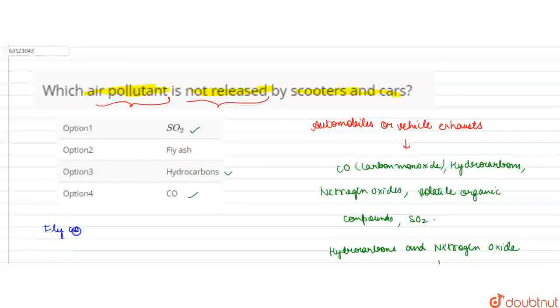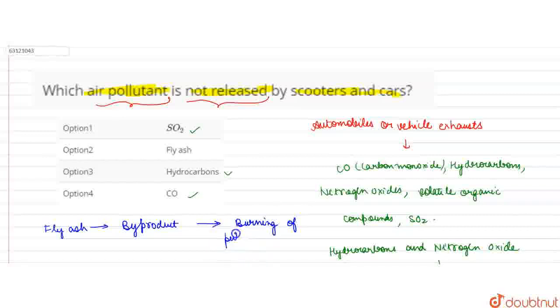Fly ash is basically a by-product when you have burning of pulverized coal.